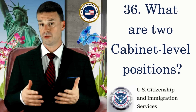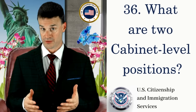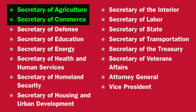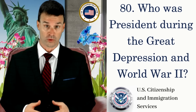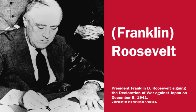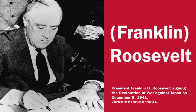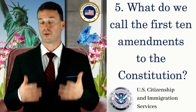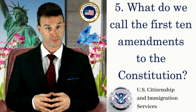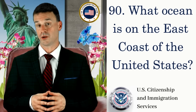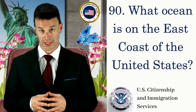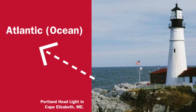What are two cabinet-level positions? Secretary of Agriculture. Secretary of Commerce. Who was president during the Great Depression and World War II? Franklin Roosevelt. What do we call the first 10 amendments to the Constitution? The Bill of Rights. What ocean is on the East Coast of the United States? Atlantic Ocean.